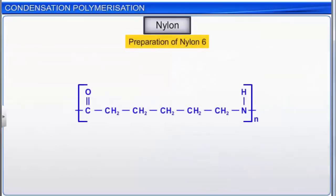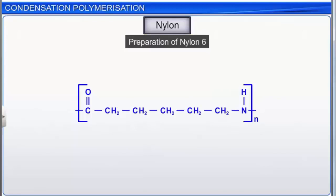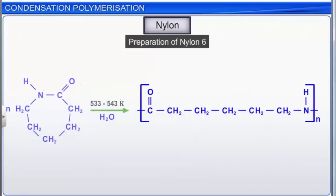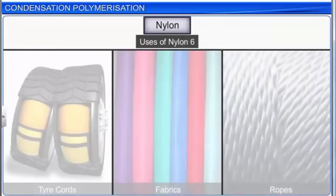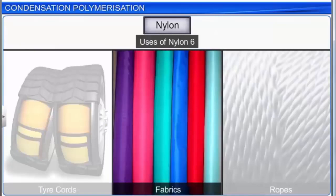Nylon-6, another synthetic fiber, resembles the properties of Nylon-6,6 closely. To obtain Nylon-6, caprolactam is subjected to prolonged heating with water at a high temperature of 533 to 543 Kelvin. Nylon-6 is known by its trade name Perlon-L. It is used to make tire cords, fabrics, and ropes.